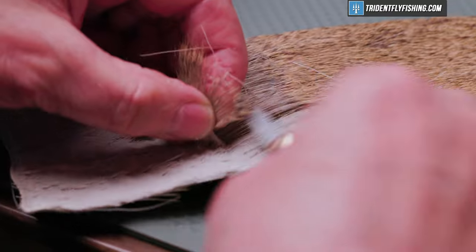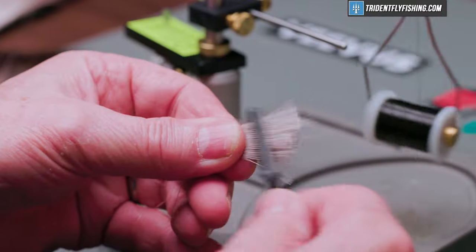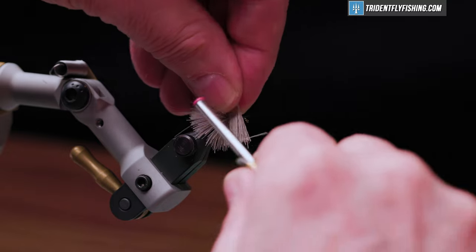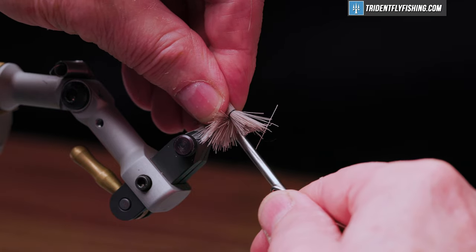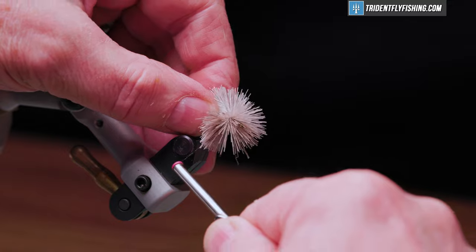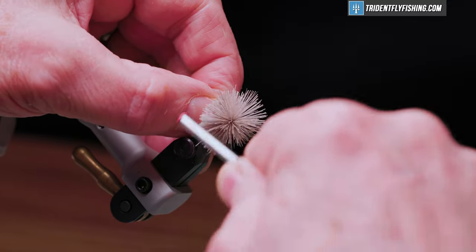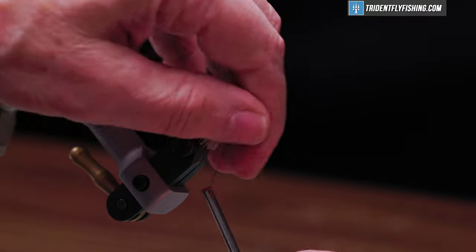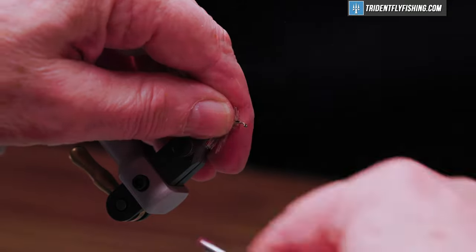We'll take another clump about the same size. Get rid of all the junk and the fuzzies, get rid of the tips which we don't need. And just like before - a couple of loose turns, pull it tight, let it slip through your fingers, and around it goes. And advance your thread through it to the eye.